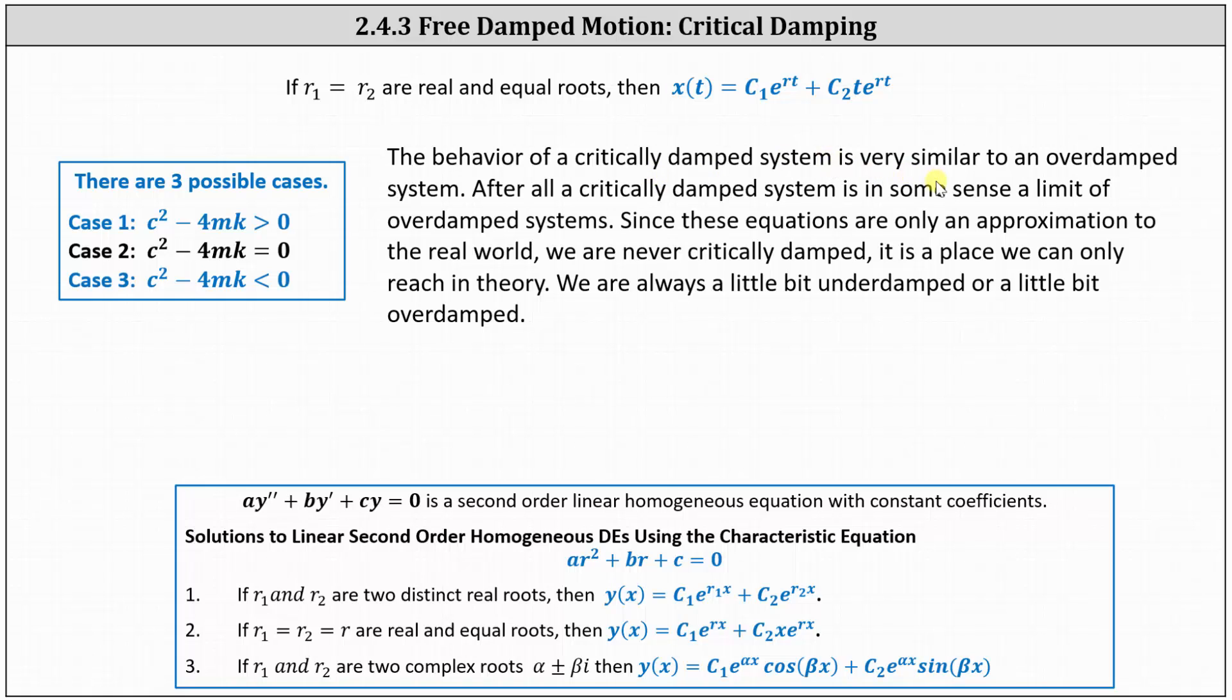The behavior of a critically damped system is very similar to an overdamped system. After all, a critically damped system is in some sense a limit of the overdamped systems. Since these equations are only an approximation to the real world, we are never critically damped. It is a place we can only reach in theory. We are always a little bit underdamped or a little bit overdamped.